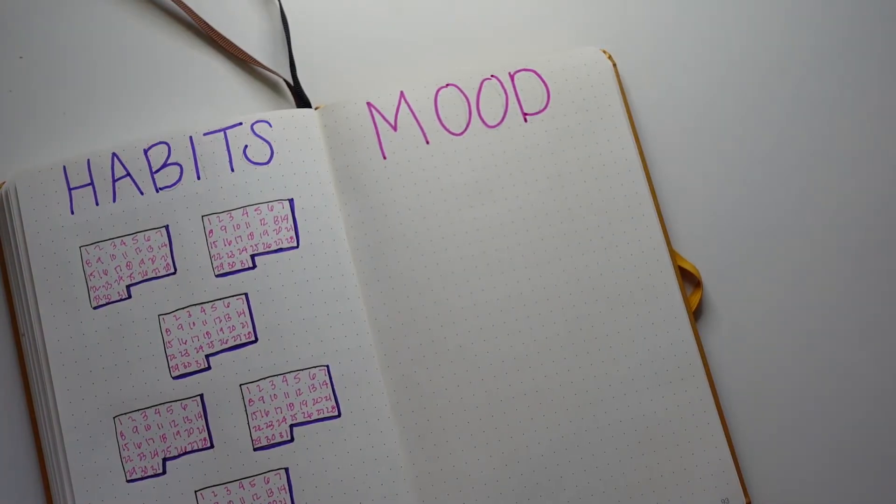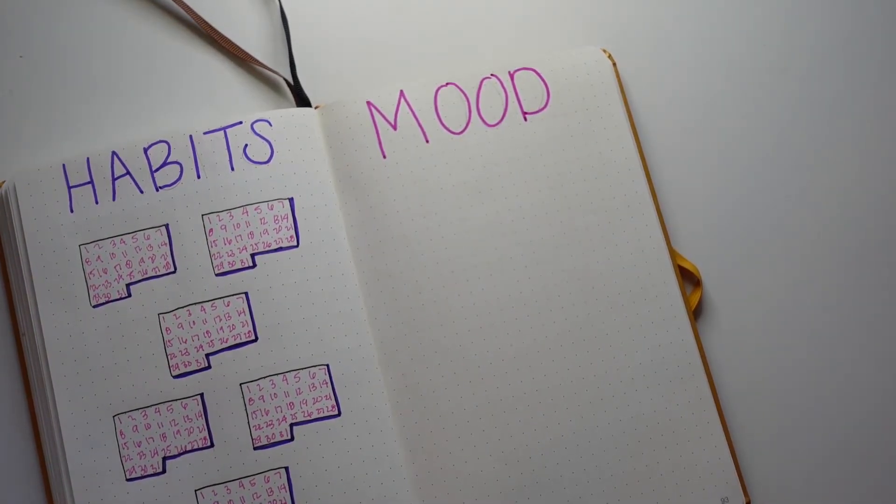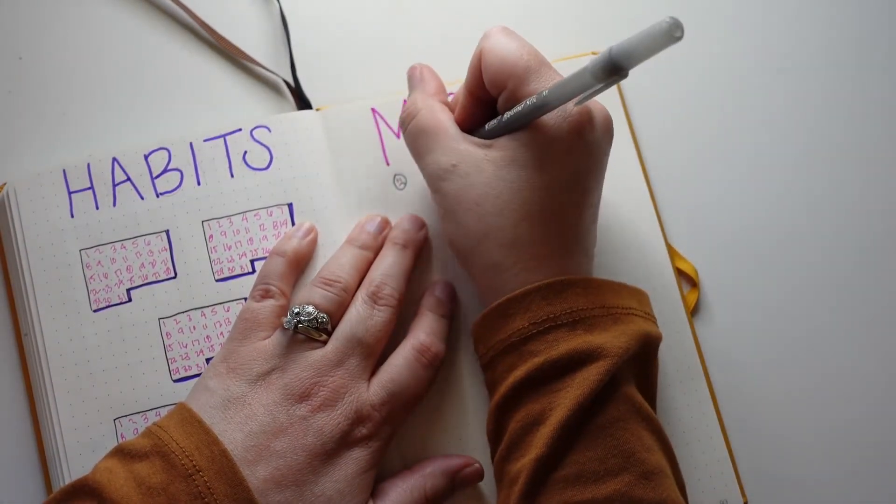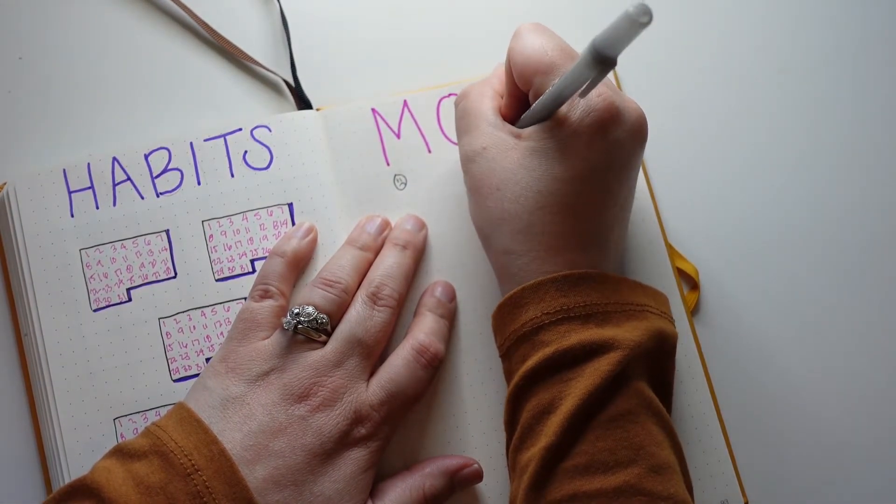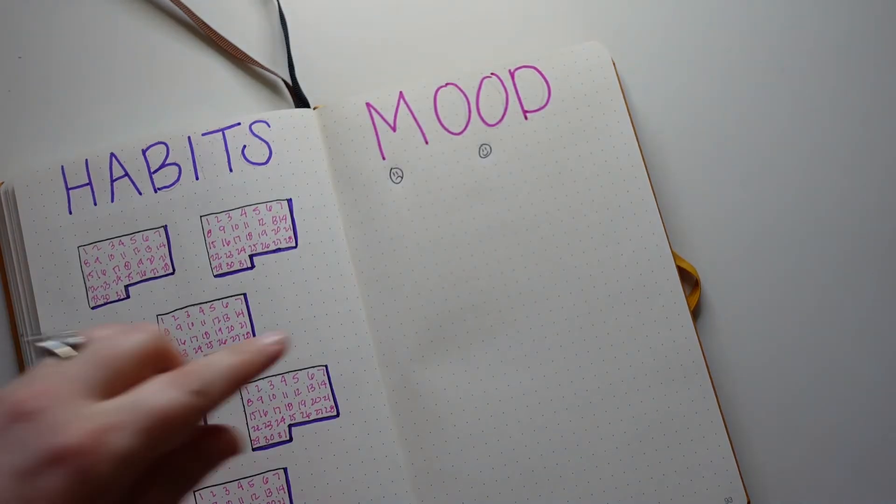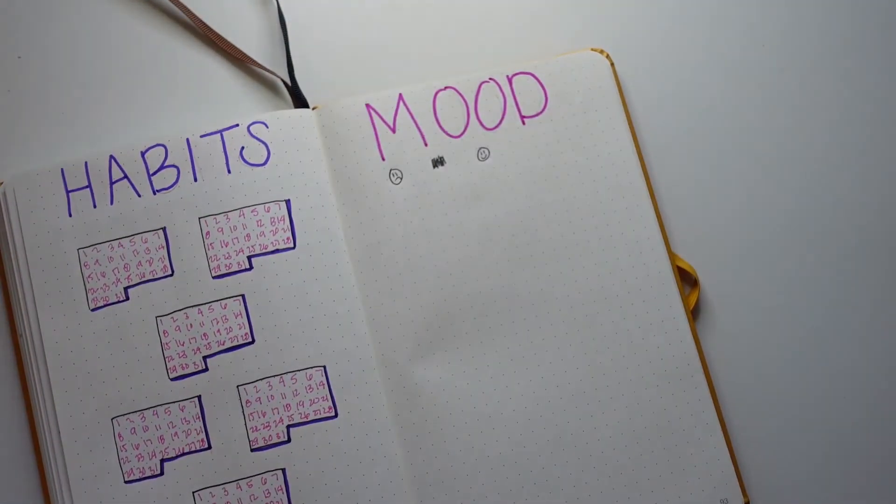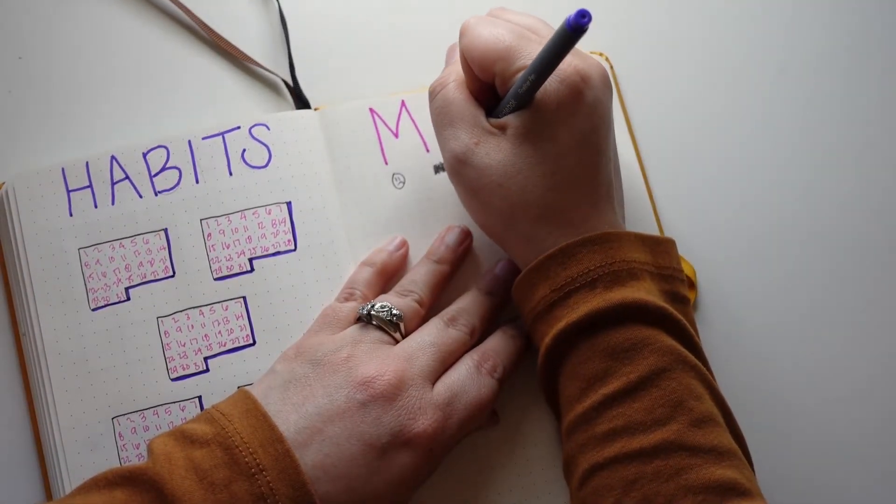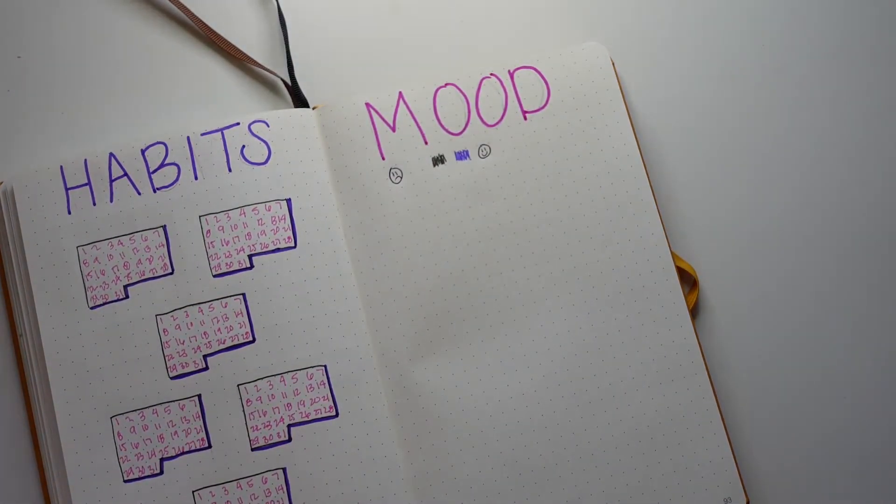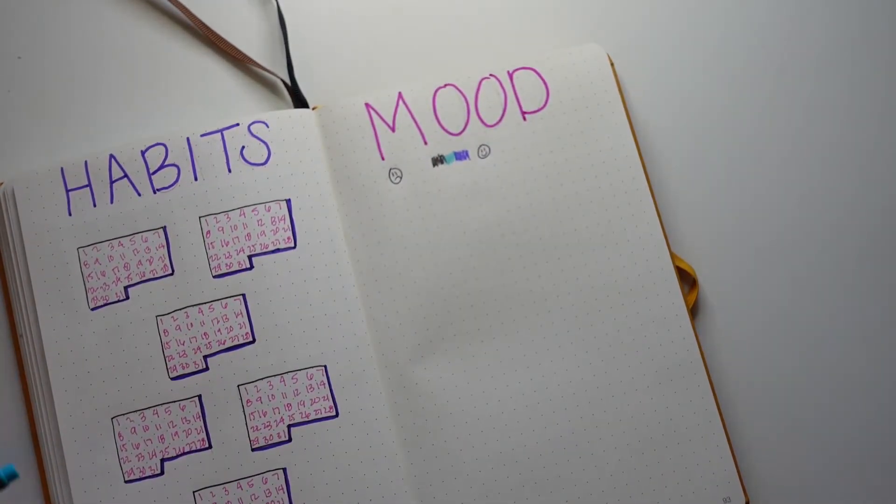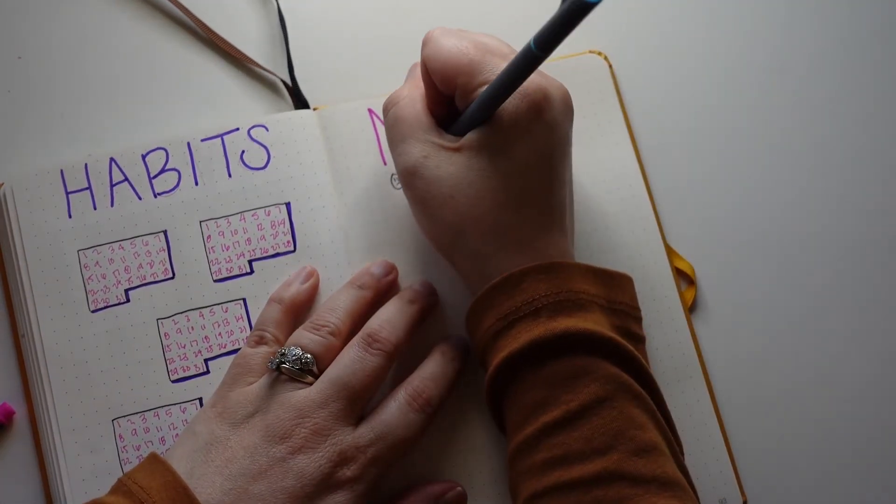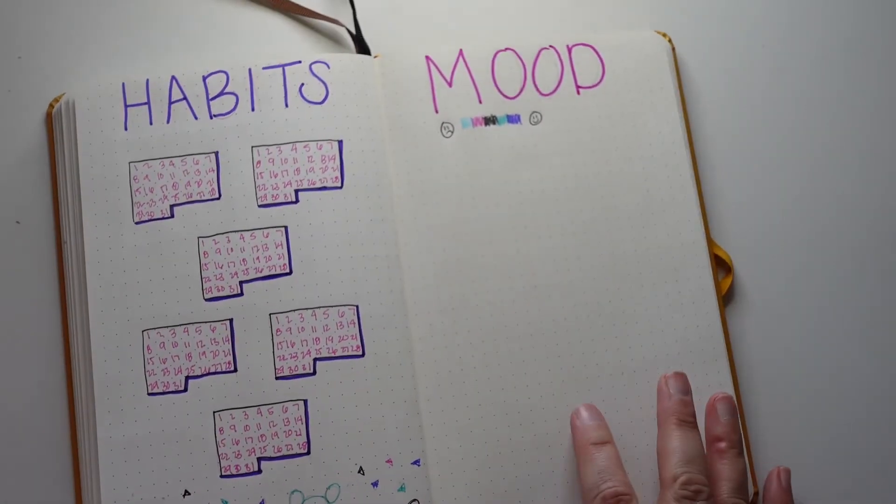On the right hand side, I have my mood tracker. It's super simple. I just write mood up at the top as the title. Right below that, I do a little sad face. And then a few spaces over, I do a happy face. And in between those, I fill out different colors. So I do five different colors for five different moods, ranging from a really terrible day to the best day ever. Sometimes I do have shapes down in the bottom that I color in those colors. But this time, I'm just going to do little Mickey head outlines in those colors.